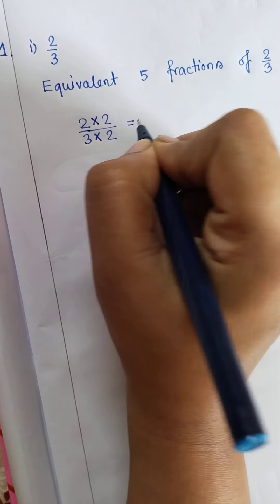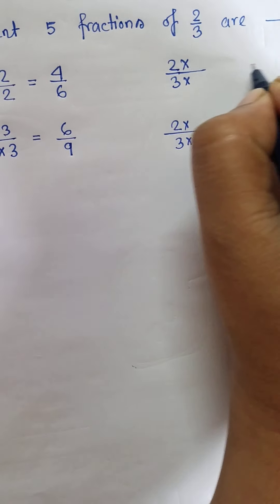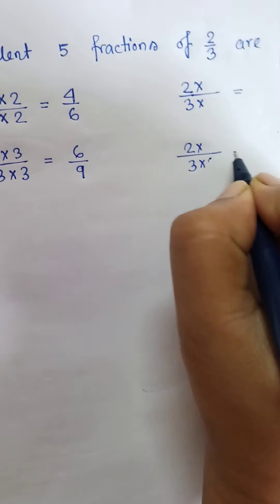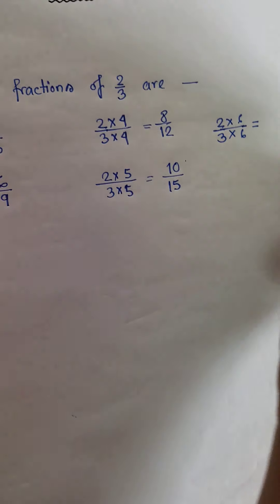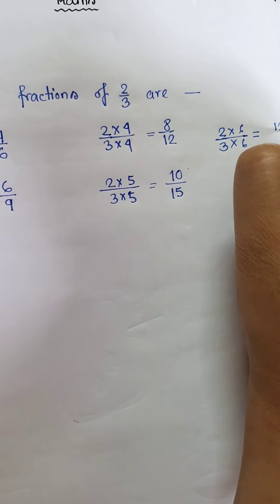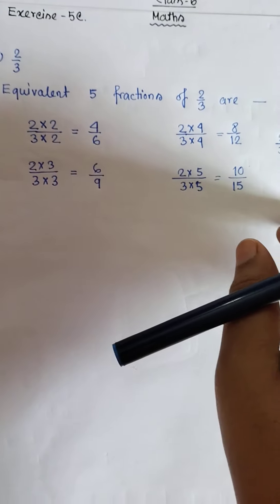After that, we will multiply the numerator and denominator with 4 to get the next equivalent fraction — it will be 8 by 12. Then the process continues: we will multiply the numerator and denominator with 5, then with 6. So the 5 equivalent fractions are 4 by 6, 6 by 9, 8 by 12, 10 by 15, and 12 by 18 — all these fractions are equivalent to 2 by 3.